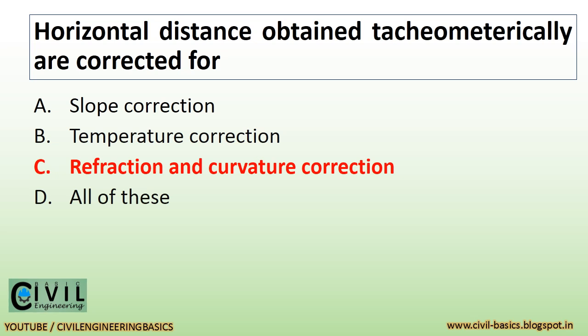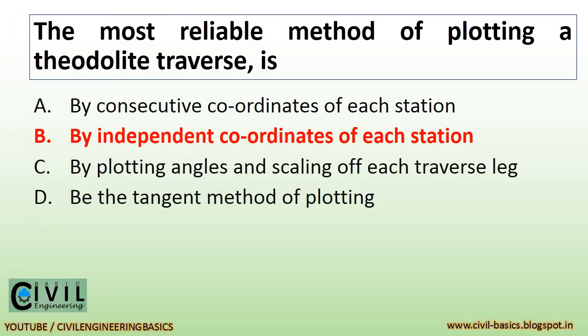Horizontal distances obtained tachyometrically are corrected for refraction and curvature correction. The most reliable method of plotting a theodolite traverse is by independent coordinates of each station.